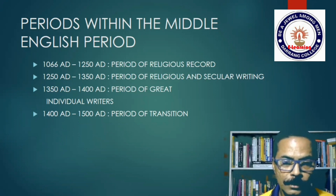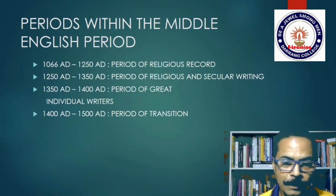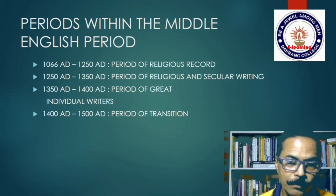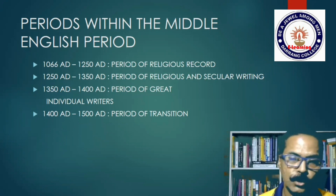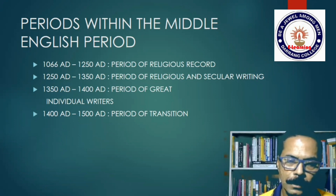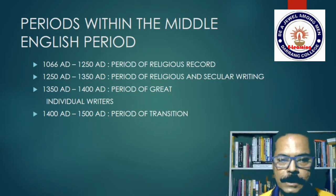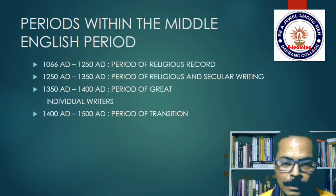From 1250 to 1350, literature transcends religion and accommodates other concerns — about society, everyday life, human emotions and feelings. This is the period of religious and secular writings. Religious writings continue, but there are also writings outside the scope of religion, heaven, and the next life, and instead considering the present life. From 1350 to 1400 is called the period of great individual writers — the most important period for students.